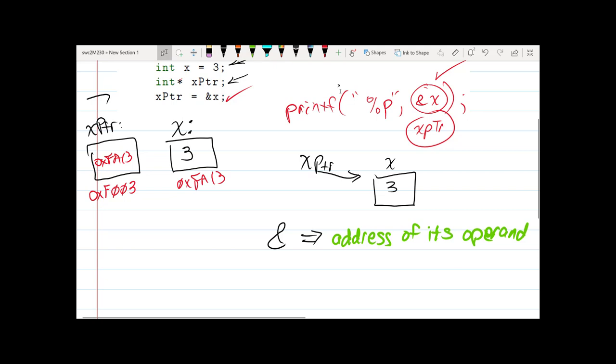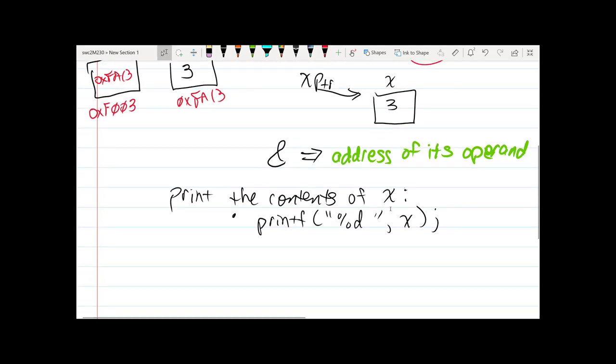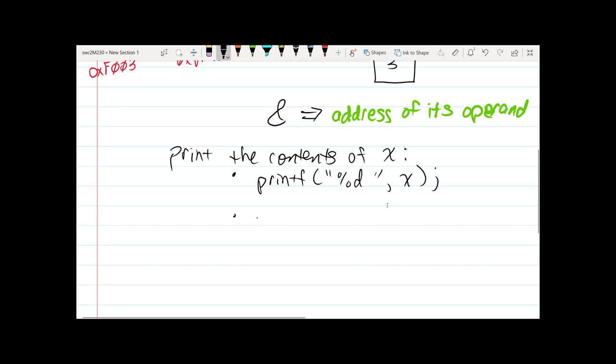So how can we use these ideas? Let's say that I wish to print the contents of the variable or the box that holds the three, essentially the variable x. I have a couple of ways of doing it. One way would be to use the standard kind of printf, percent d, and then we'd say simply x. And that will print out the contents of x. The other way to print out the contents of x is to use a printf and then a percent d.